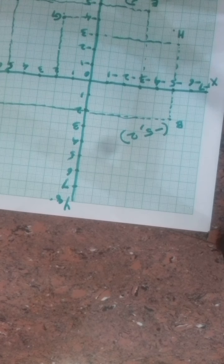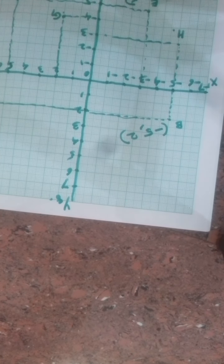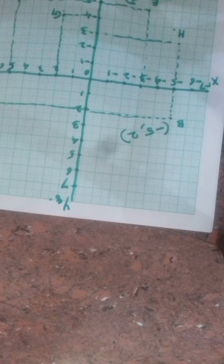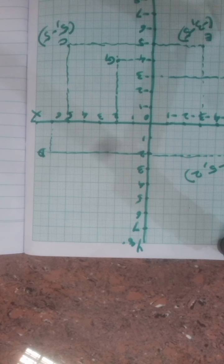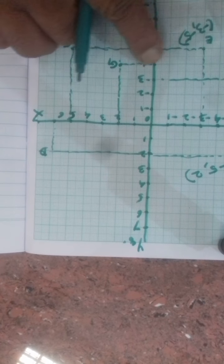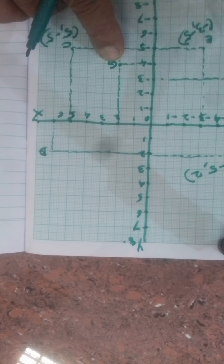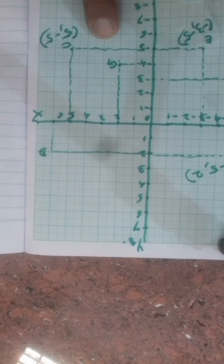The fourth question: identify the point with coordinates 2 comma minus 4. Looking at the figure, 2 on the x-axis and minus 4 on the y-axis — the point identified by the coordinates 2 comma minus 4 is G.